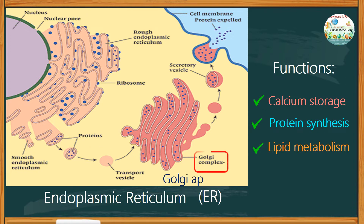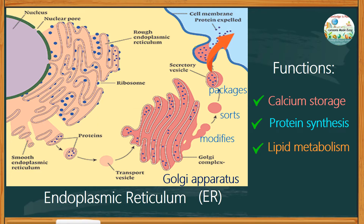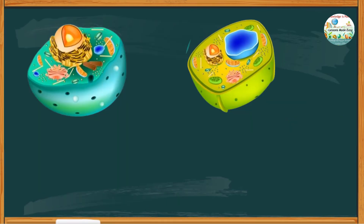The smooth ER transports the products of the rough ER to cellular organelles, especially the Golgi complex, also known as the Golgi apparatus. The Golgi complex modifies, sorts, and packages proteins and lipids for transport to their destination within or outside the cell.